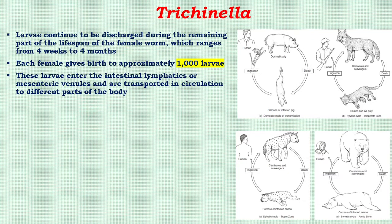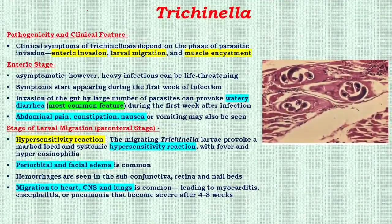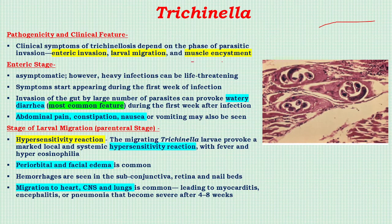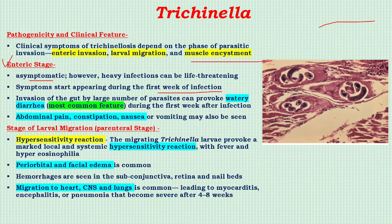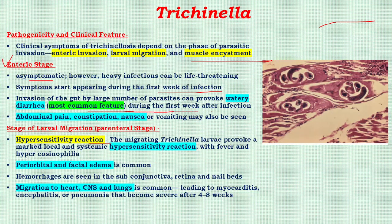Each female gives birth to approximately 1,000 larvae; these larvae enter the intestinal lymphatics and mesenteric venules and are transported through circulation to different parts of the body. Pathogenicity and clinical features occur in three phases. The enteric phase is often asymptomatic, but in heavy infection life-threatening symptoms appear during the first week. Invasion of the gut by large numbers of parasites can provoke watery diarrhea, which is the most common feature of trichinosis.